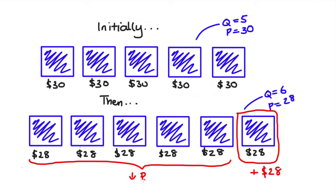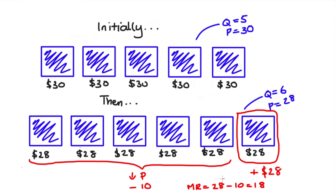But that's only half the story, because we've also had to drop the price on the first five boxes. For those first five boxes, we used to charge $30, but now we charge $28 per box. So cumulatively we've lost $2 per box across five boxes — that's down $10. So the additional revenue from producing one more box is: we gain $28 from the new unit, but subtract the negative impact of the price drop on the first five units — negative $10 — and we get 18.